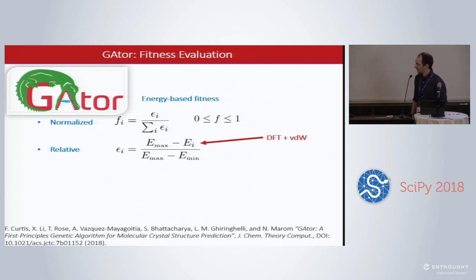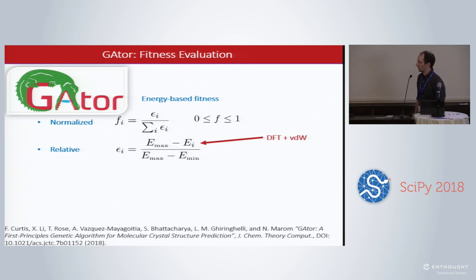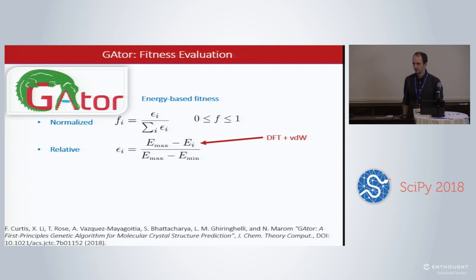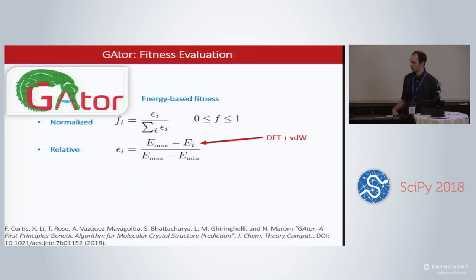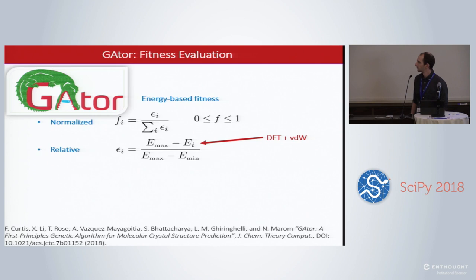The standard way to define fitness is just with energy alone. These energies are computed with light settings of DFT with van der Waals correction using the FHI-aims code. The fitness is just the normalized relative energy values with respect to the current max and min energies of the population, where i is structure i.